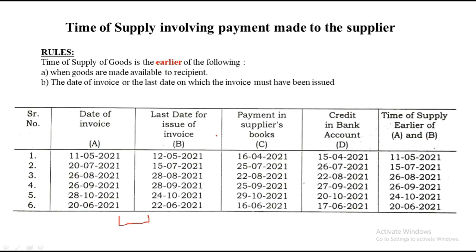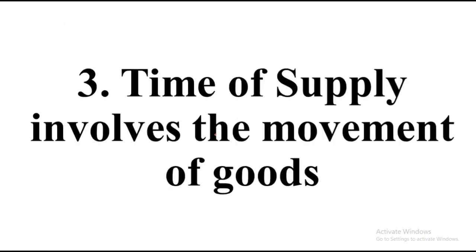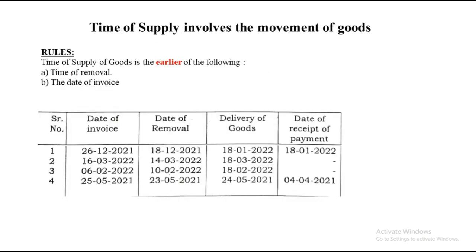Now we jump to the third one. Third: time of supply involving the movement of goods. Very important from the exam point of view. The rule is: when there is movement of goods, it will again be the earlier of time of removal and date of invoice. If you look carefully in the question there is date of invoice and date of removal. The moment you see 'removal,' understand it is movement of goods — the rule is date of invoice and removal date, whichever is earlier, will become your time of supply.